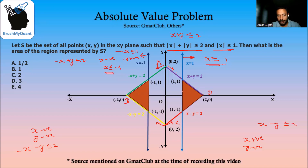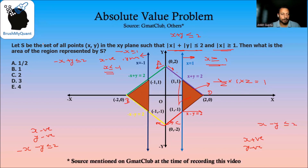These two triangles are congruent, and we can find the area using ½ × base × height. The height is 1 and the base is 2, so the area of one triangle is 1. Therefore, the area of both triangles is 2 square units. The answer is option C.